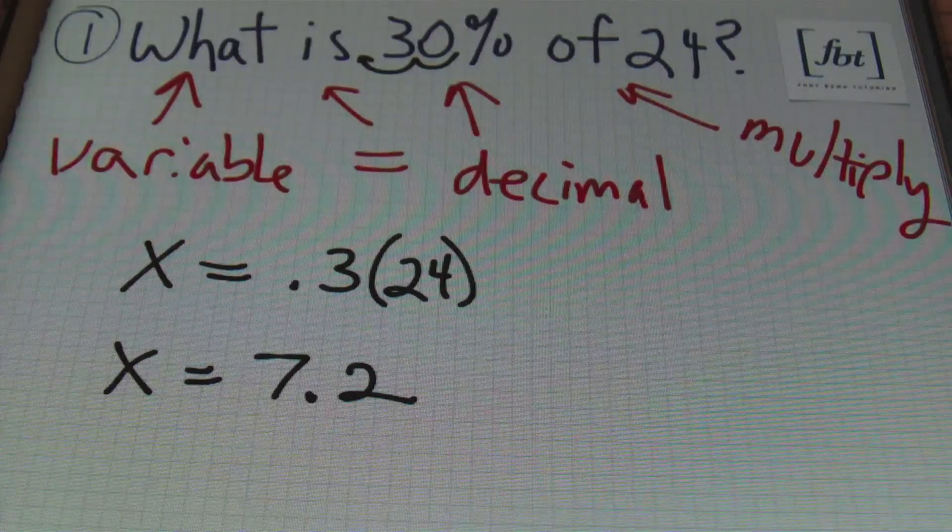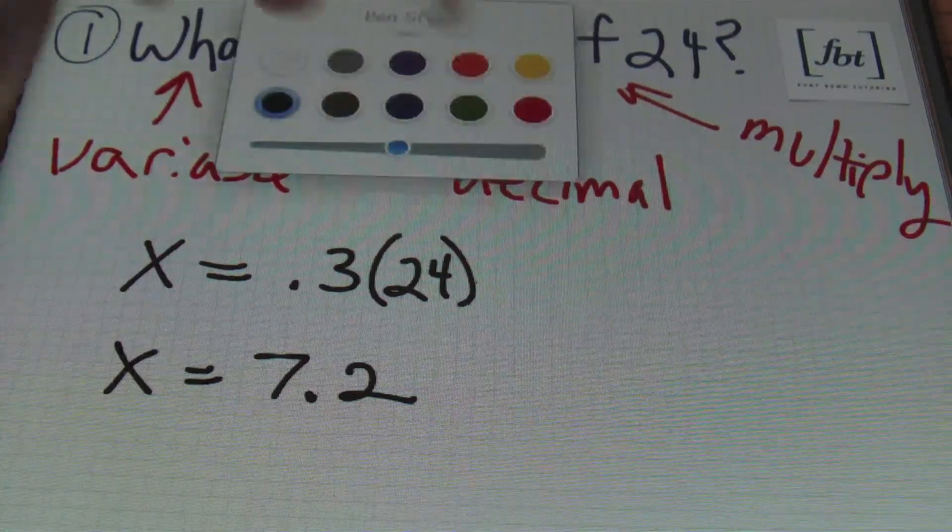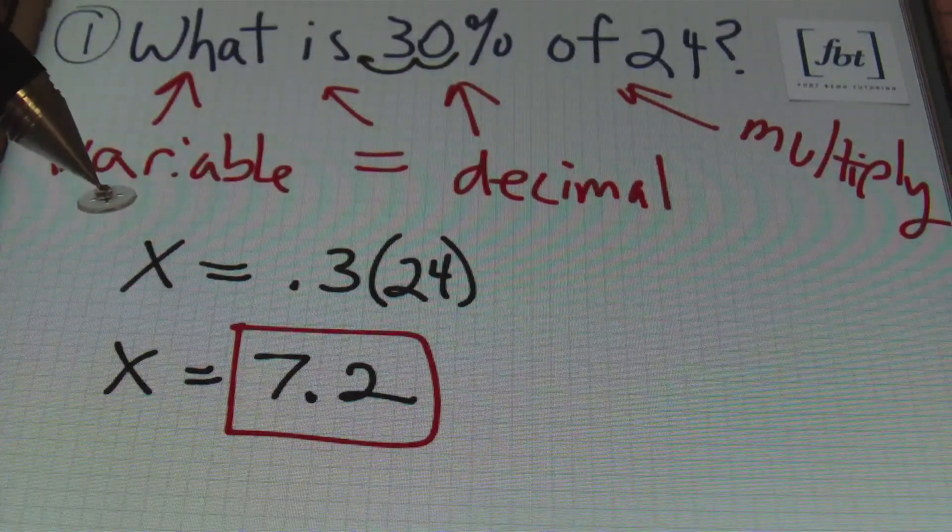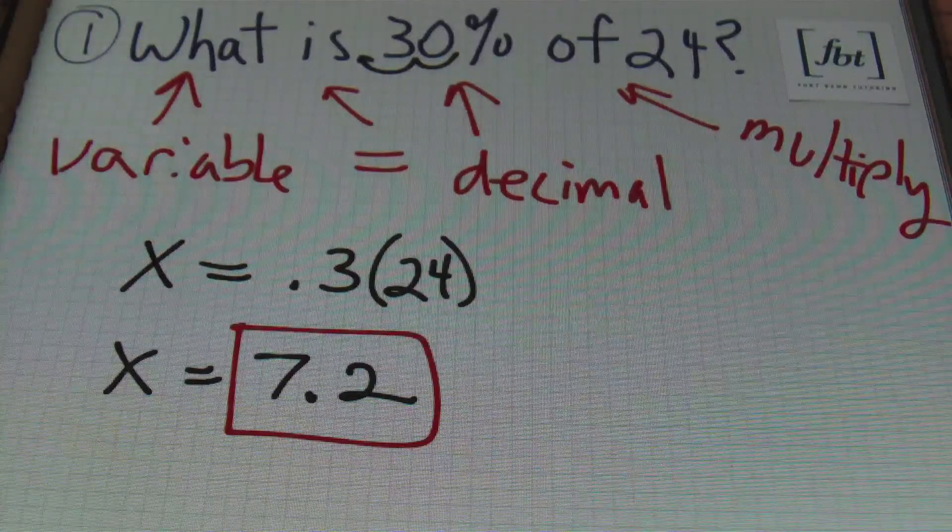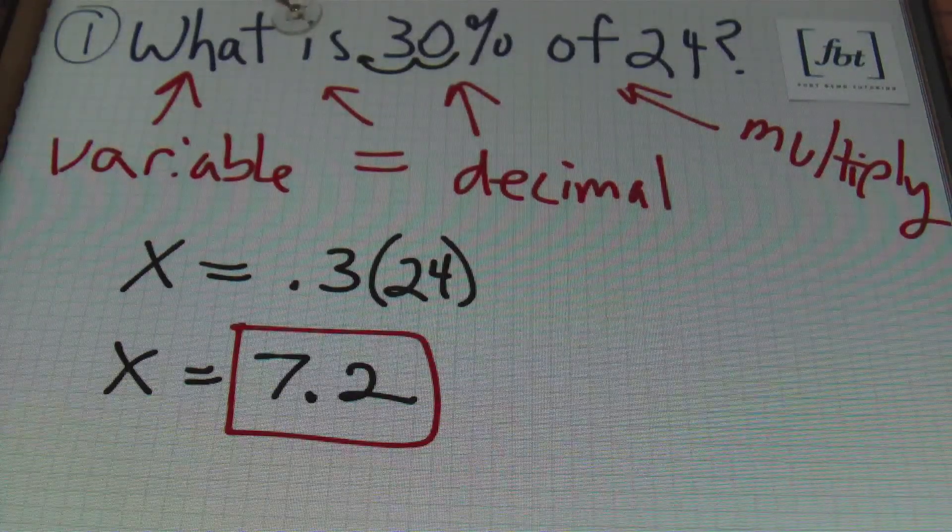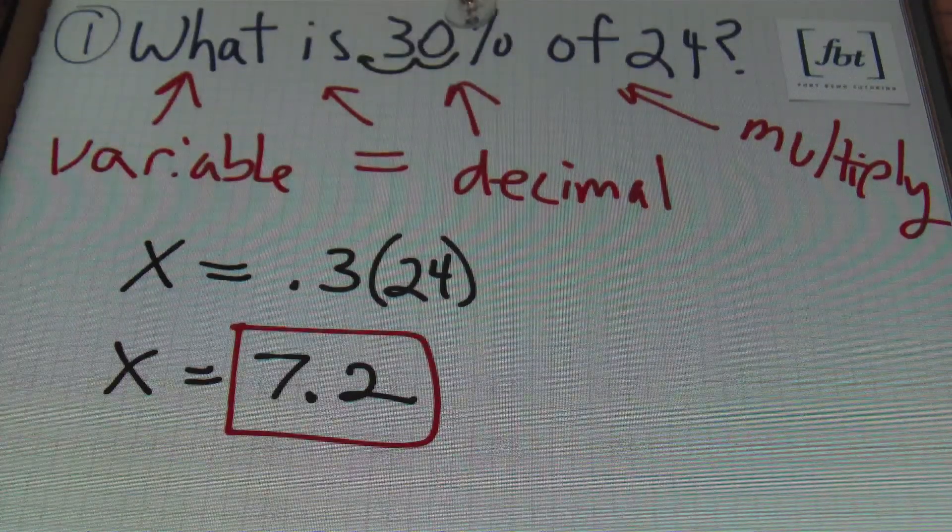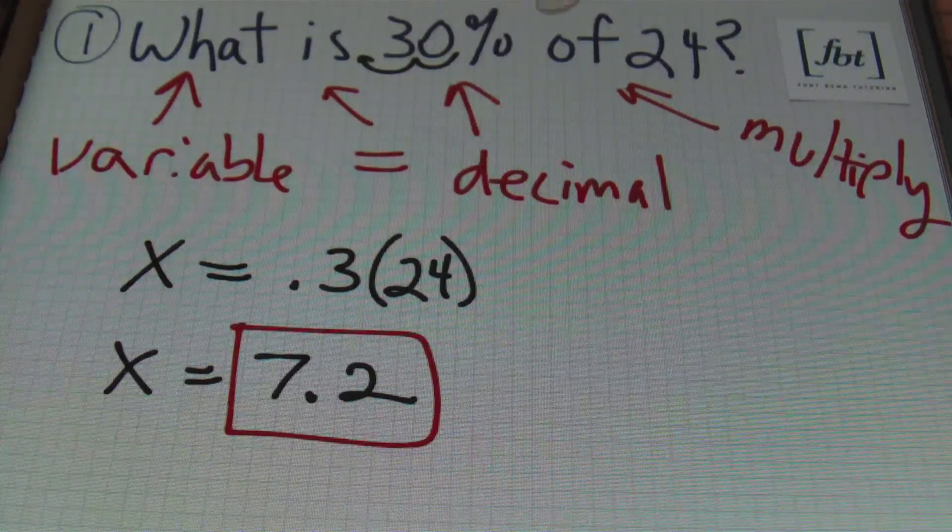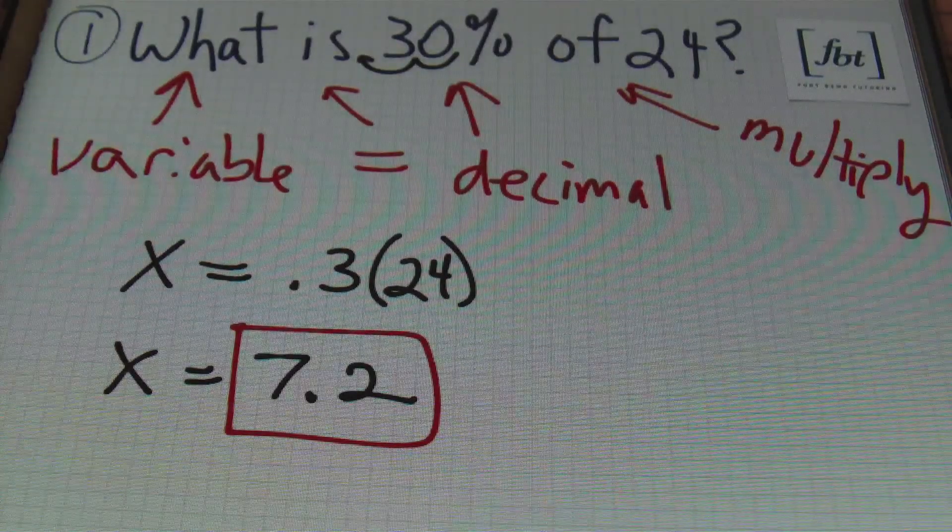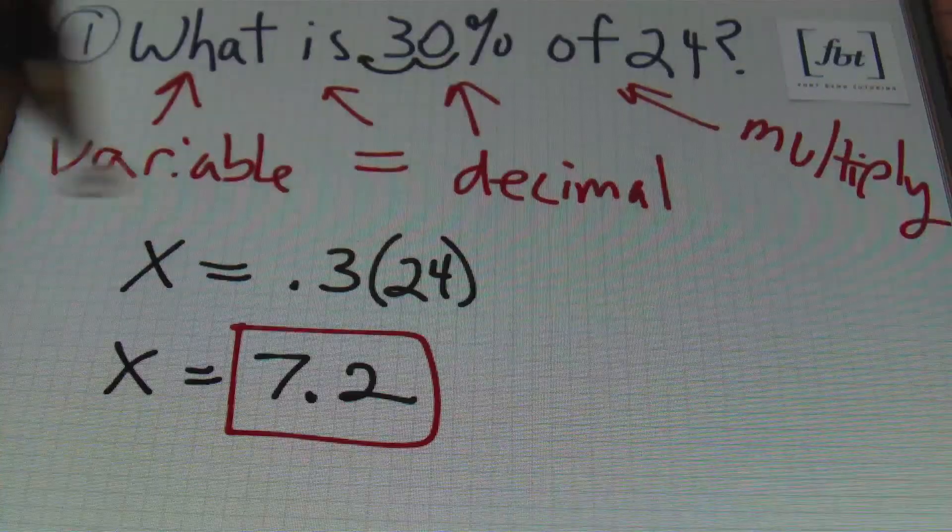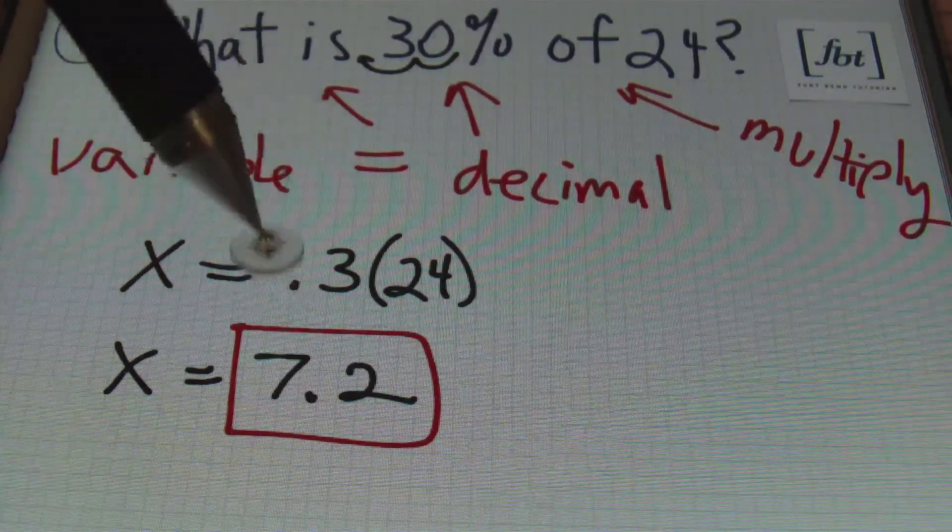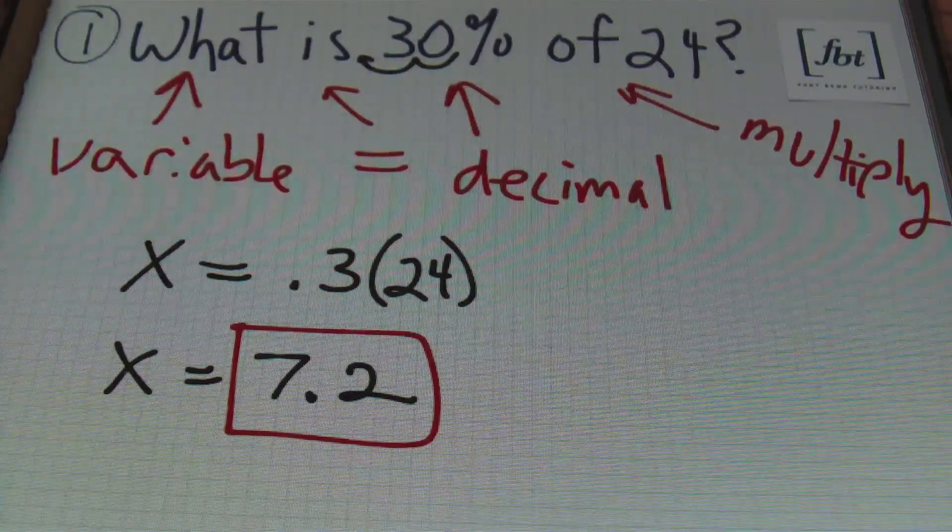I'll show that using parentheses this time, and I have my number 24. So multiplying 0.3 times 24, you end up with x equaling 7.2. That's our answer, ladies and gentlemen.